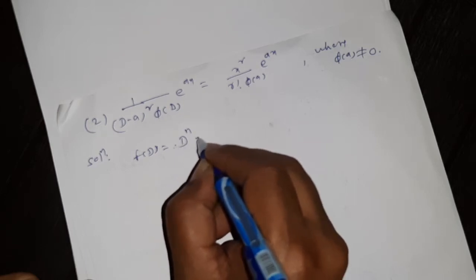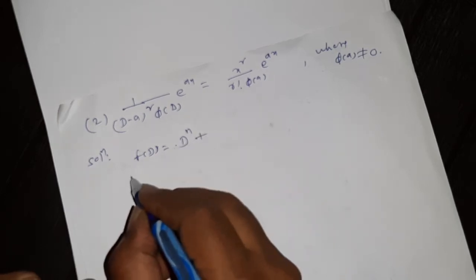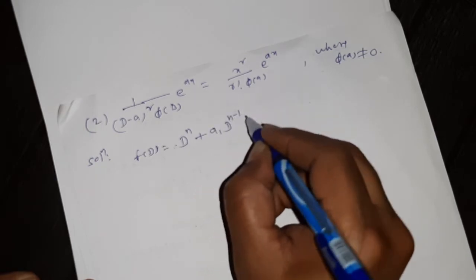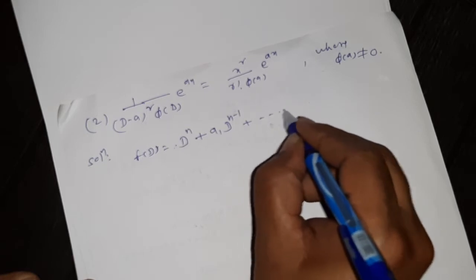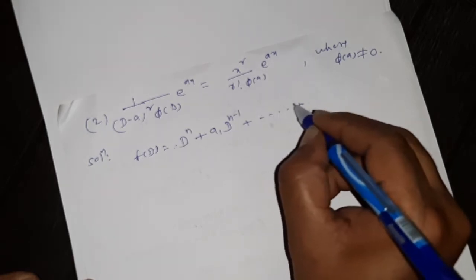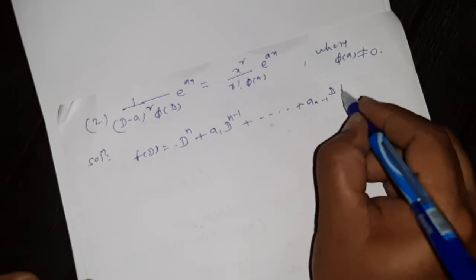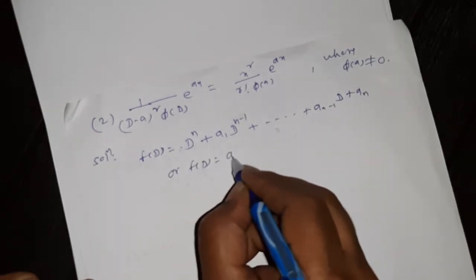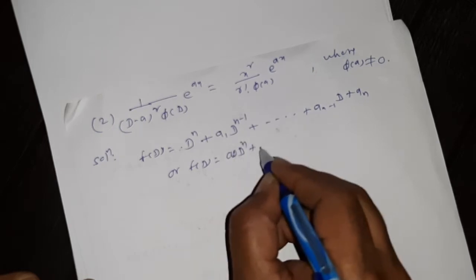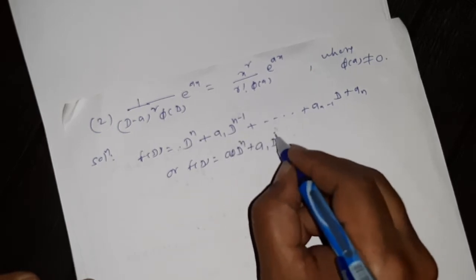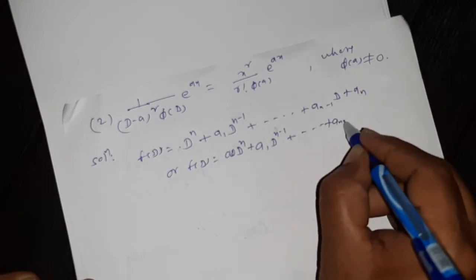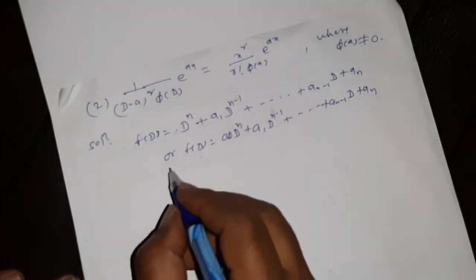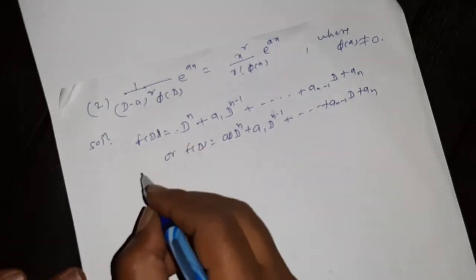1 into D raised to n. What is U of D? U of D is a_1 D raised to n minus 1. In this way, a_2, a raised to D raised to n minus 2, a_(n-1) D plus a_n. We know that this is R. U of D is a_0 D raised to n, a_1 D raised to n minus 1, plus so on, a_(n-1) D plus a_n. This is given in the theorem. We write this U of D.